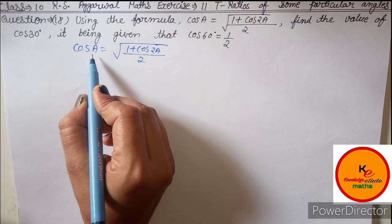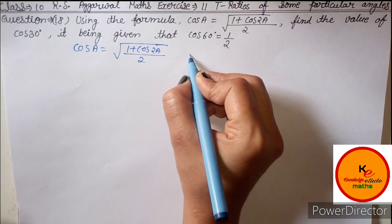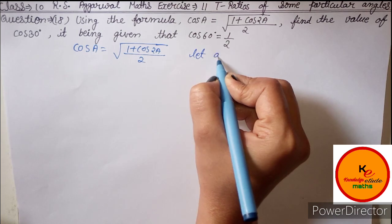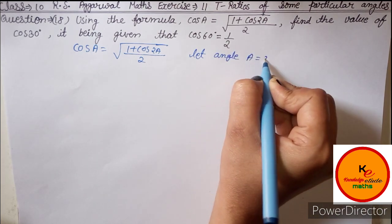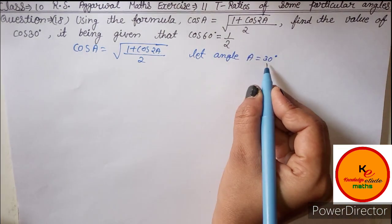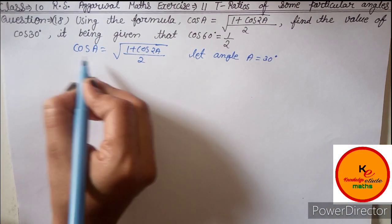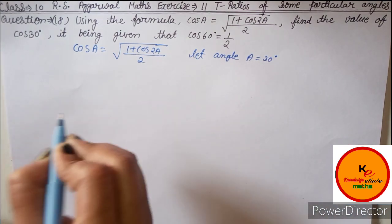So first of all, let us assume that angle A is equal to 30 degree. By doing this, you will be able to write 30 degree here.